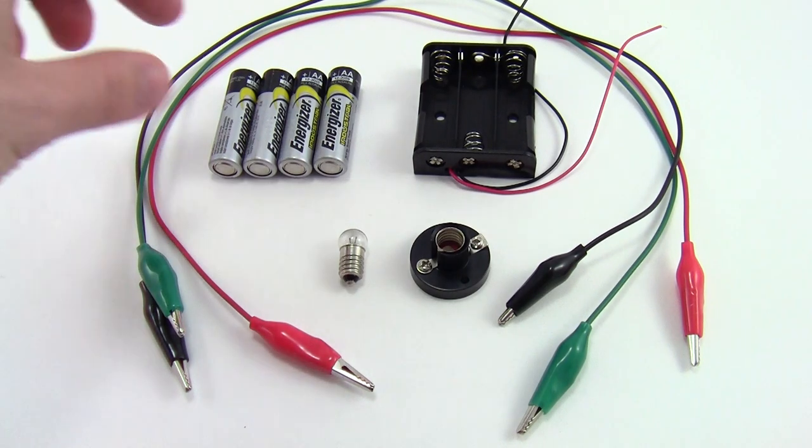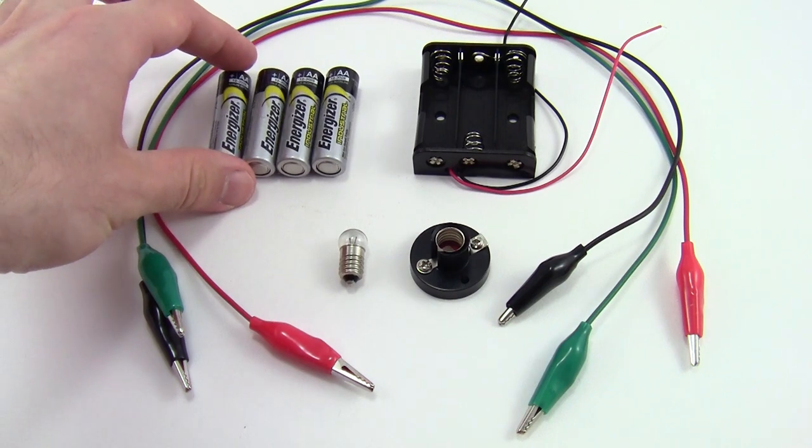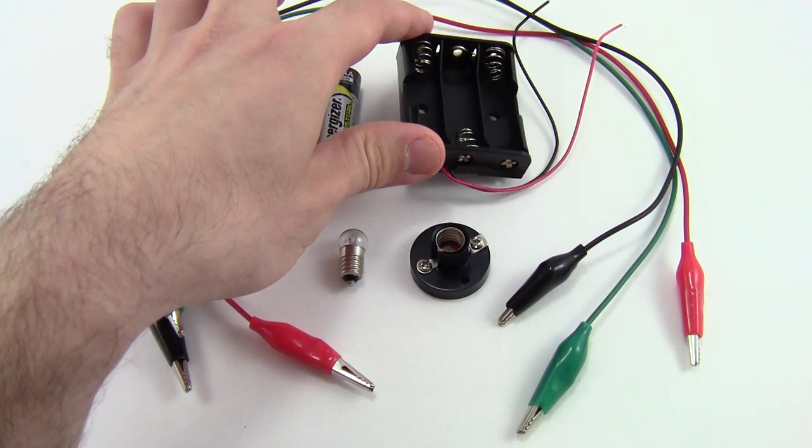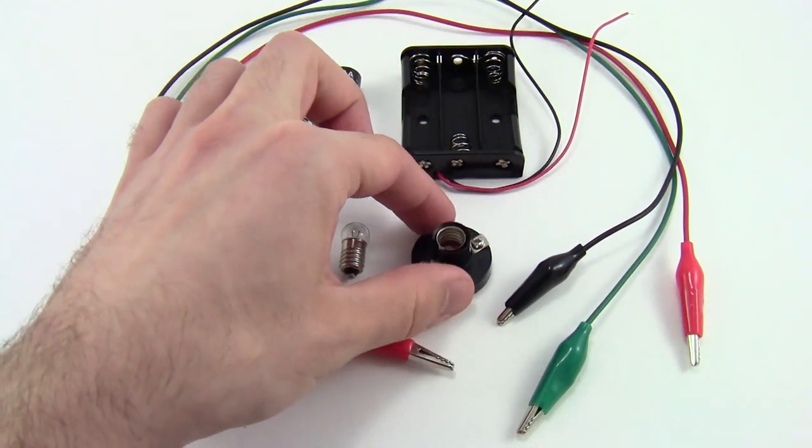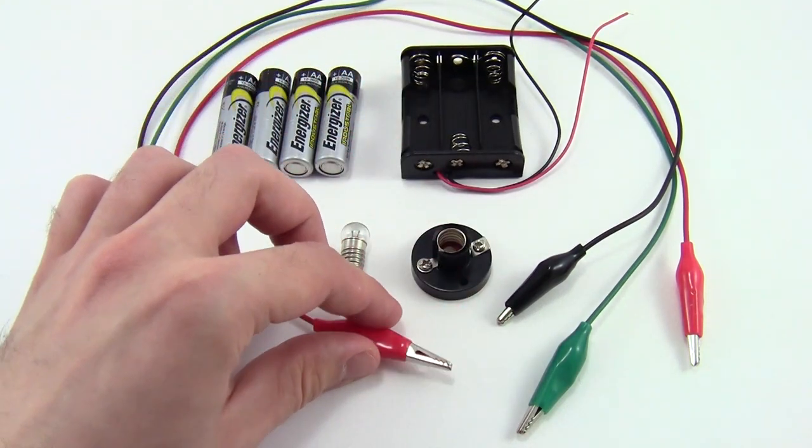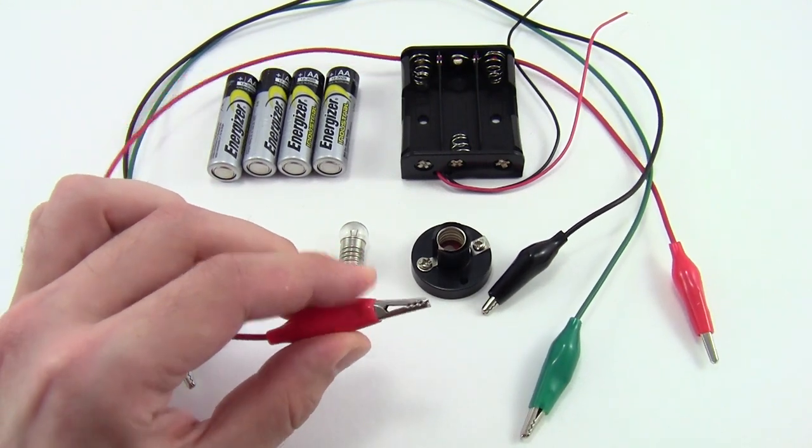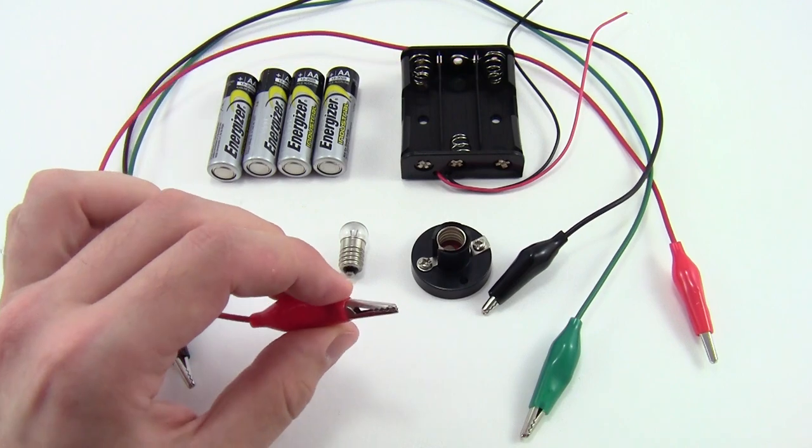So here we have all the parts in the kit. You have four AA batteries, a three AA battery holder, so your kit comes with one extra battery. You have a small light bulb, a light bulb base, and three alligator clips, which get their name because they have these little metal jaws that can grab onto wires and circuit components.